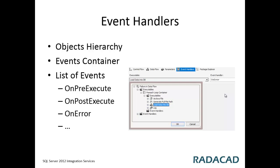For using event handlers, you can create an event handler on any of the executable objects. An SSIS package consists of multiple executables. These executables can be a task, container, or a package itself. All of these objects exist in a hierarchy — for example, a package, under that a container, and under that container there are multiple tasks. You can define an event handler on any of these containers, tasks, or objects as executable objects.